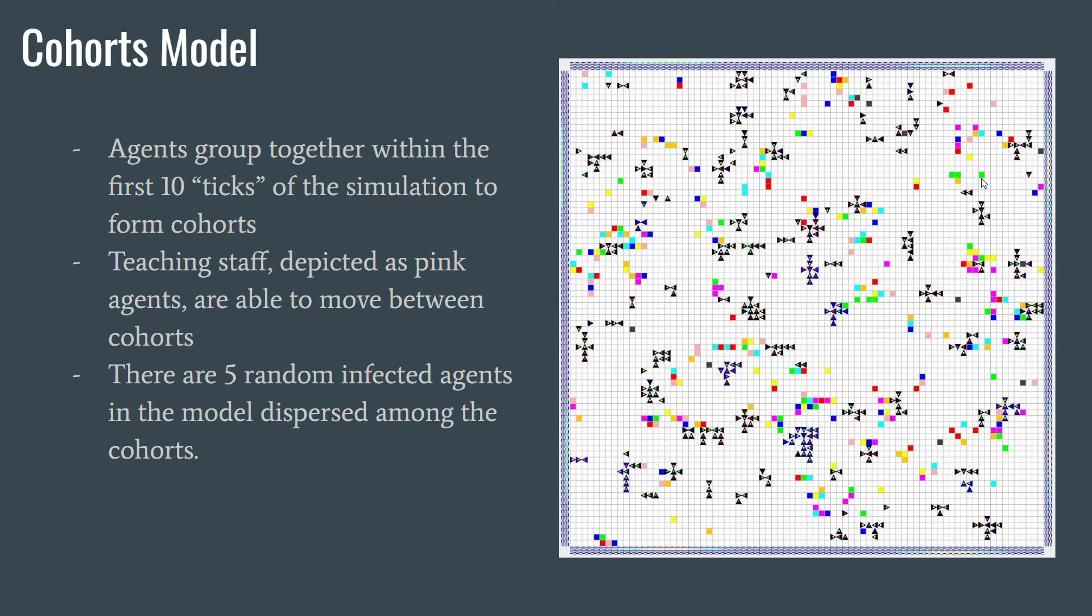This way, they can spread the disease if they are to get infected from one cohort to another. There are five random agents infected on the board, and they are dispersed among these cohorts.